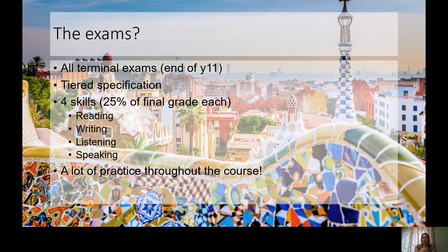The exams are all terminal, meaning all of your exams are at the end of year 11 — there's no coursework and no exams through year 10. It's a tiered specification, which means you do either foundation or higher, a decision you make with your teacher around January or February of year 11. You have four skills examined, each worth 25% of your final grade: reading, writing, listening, and speaking.